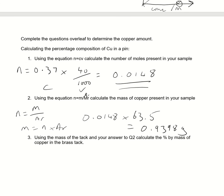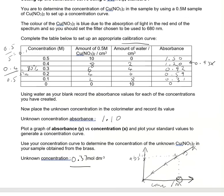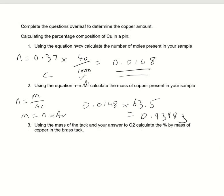Now, using the mass of the tack, so what did I say ours was? I just picked 2 grams. So using the mass of the tack in your answer here, I'll give you the percentage of my mass of copper in the brass tack. So 0.9398 divided by 2 times 100, 46.99% there. And that is done. Thank you.